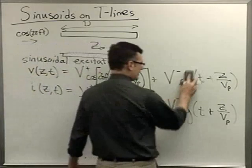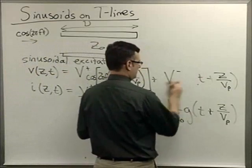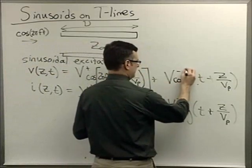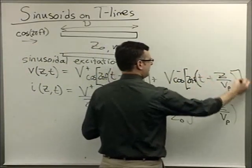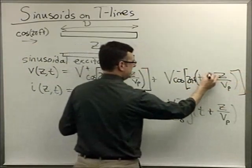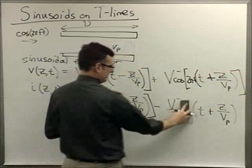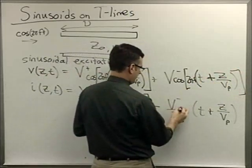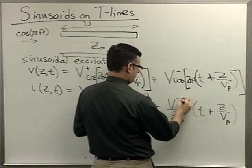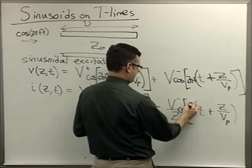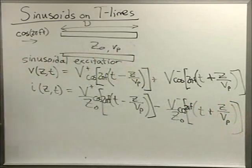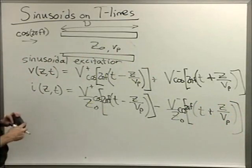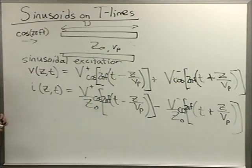And likewise, our g's are going to be the same quantity. 2πf, that amount, t plus z over velocity of propagation. So that's with sinusoidal excitation. All I did was just assume that everything's going to be a cosine.